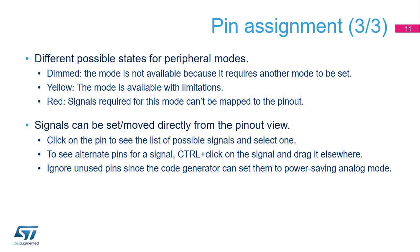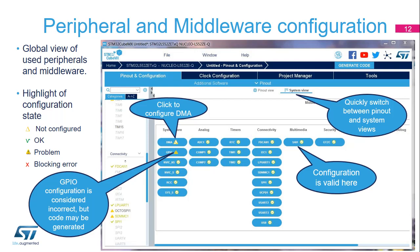It is not necessary to manually set all unused pins to analog — there is a semi-automated step that does this. The Configuration tab of the main window provides an overview of all the configurable hardware and software components that STM32CubeMX can help set up. Each button with access to configuration options is displayed with a small icon indicating the configuration state.